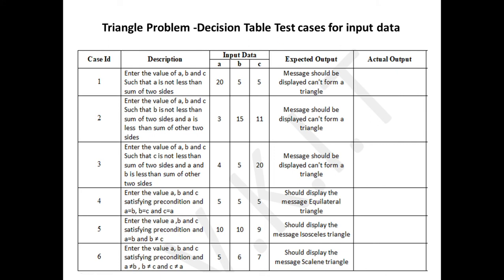For the second test case: your first condition must be true but your second condition must fail (be false). You enter such values and it should display the message that it cannot form a triangle. For the third test case: your first and second conditions must be true, but the third condition C3 must be false. Give such input values and check the output.